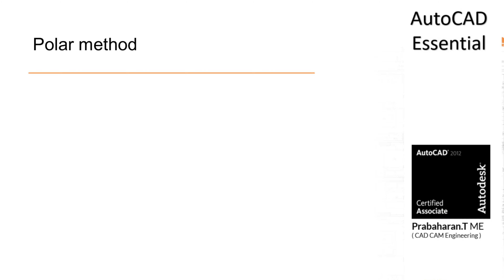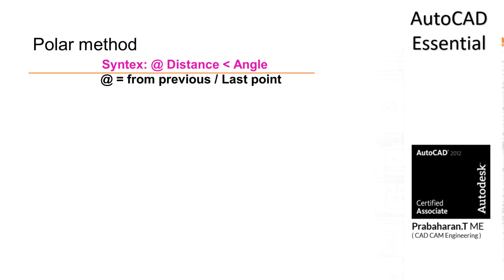How to fix the point using the polar method? There is a syntax: at the rate, distance, less-than symbol, angle. This less-than symbol represents that you are going to give an angle in AutoCAD. Hereafter, after the less-than symbol, if you give some value, that will be considered as an angle. At the rate, as usual, means reference from the previous point or last point.